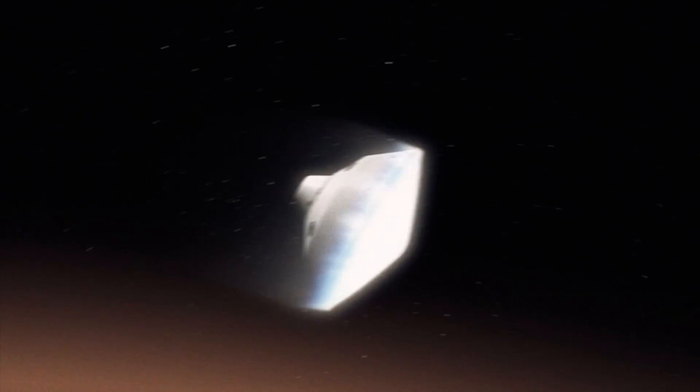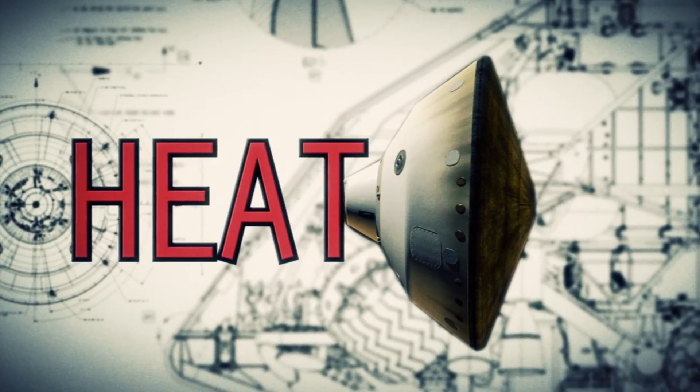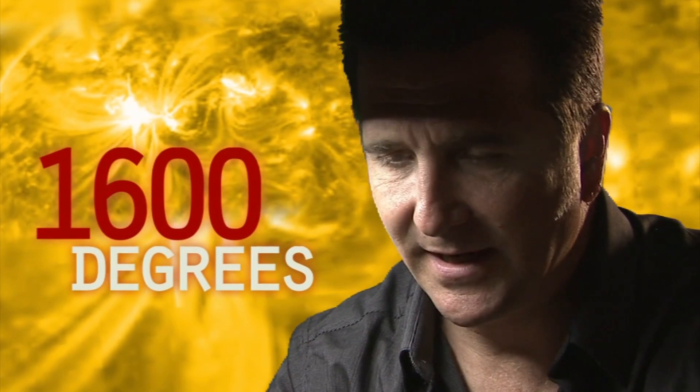We slam into the atmosphere and develop so much aerodynamic drag. Our heat shield heats up and it glows like the surface of the sun, 1600 degrees.